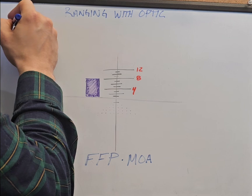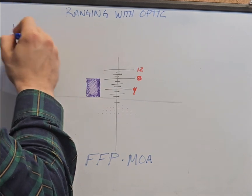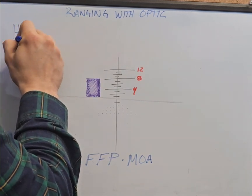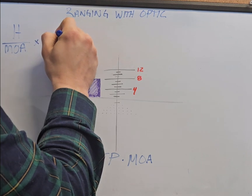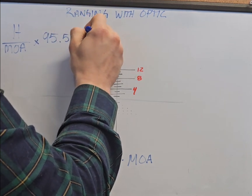This is the equation you plug that into. It's going to be height over minutes times 95.5 equals yards.